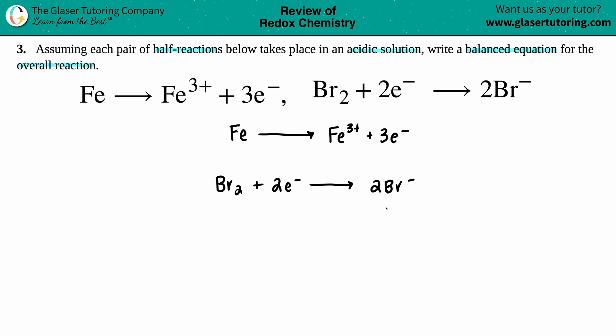The first thing you always want to make sure is that the elements are balanced. I'm not even going to worry about the electrons right now—that's coming later. Just make sure your elements are balanced, but it looks like they are here. I have one iron, one iron, two bromines, two bromines, so the elements are balanced.